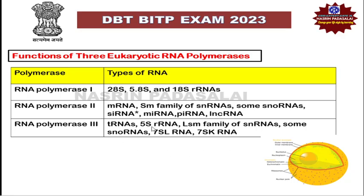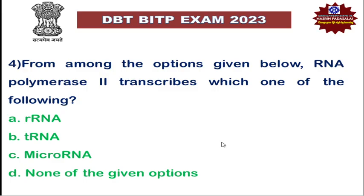Genes transcribed by RNA Polymerase III include transfer RNA, 5S ribosomal RNA, and the Lsm family of small nuclear RNA. Small nuclear RNAs are classified into two subtypes: the Sm family is transcribed by RNA Polymerase II, and the Lsm family is transcribed by RNA Polymerase III. The 7SL RNA is a cytoplasmic RNA with an important role in the Signal Recognition Particle, involved in directing newly synthesized proteins to their destined location. The 7SK RNA is also transcribed by RNA Polymerase III and is involved in transcription elongation.